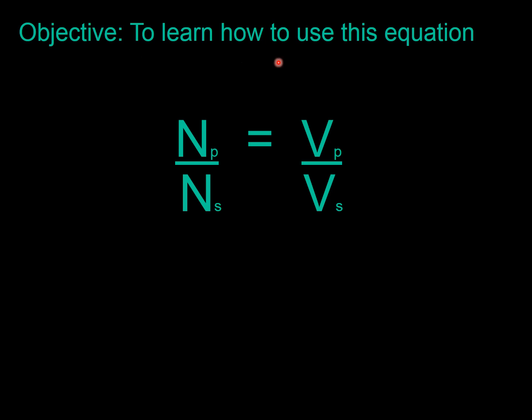In this video I'm going to show you how to use this equation which is the transformer equation. It's the second transformer equation which shows the number of turns that it has, the number of times the copper coil is wound around and compares it to the potential difference.